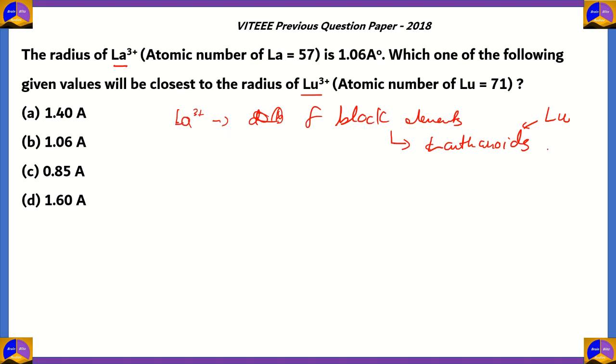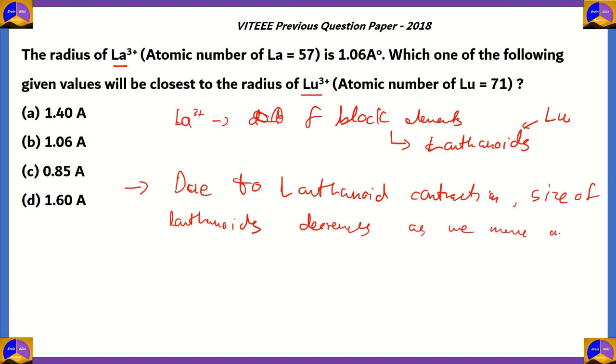Therefore, lanthanum and lutetium are lanthanoids. What is so unique about that? There is a phenomenon known as lanthanoid contraction. Due to lanthanoid contraction, the size of the lanthanoids decreases as we move along the period.